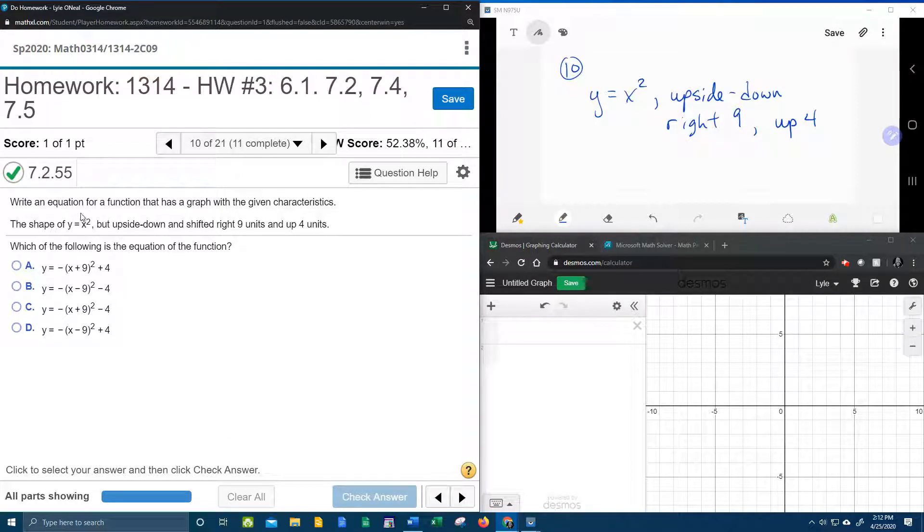It says the shape of y equals x squared, that's the parent function. It needs to be upside down, shifted right 9, and up 4. I've got that written down up here, summarized on my screen. Let's talk about what's going on here.